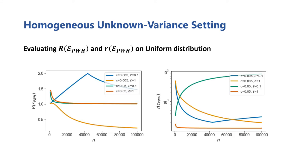To understand the practical performance of the PWH estimator, we revisit our scenario where all users' data is drawn from the uniform distribution, and plot the estimator's corresponding relative improvements over the best baseline, shown on the left, and worst baseline, shown on the right. From the left chart, we see that the PWH estimator often performs better than the baseline estimators, and sometimes even performs competitively with the hybrid estimator in the known variance setting.